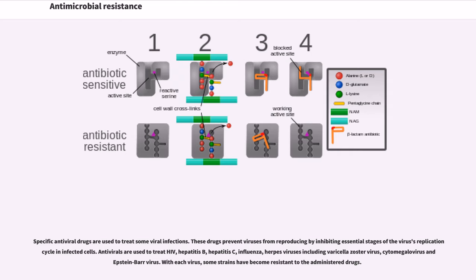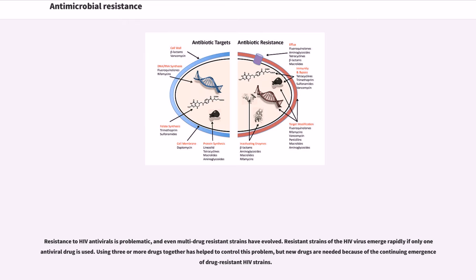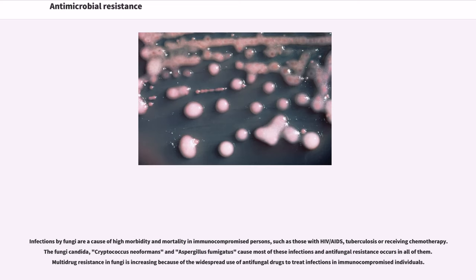Specific antiviral drugs are used to treat some viral infections. These drugs prevent viruses from reproducing by inhibiting essential stages of the virus's replication cycle in infected cells. Antivirals are used to treat HIV, hepatitis B, hepatitis C, influenza, herpes viruses including varicella zoster virus, cytomegalovirus and Epstein-Barr virus. With each virus, some strains have become resistant to the administered drugs. Resistance to HIV antivirals is problematic, and even multi-drug resistant strains have evolved. Resistant strains of the HIV virus emerge rapidly if only one antiviral drug is used. Using three or more drugs together has helped to control this problem, but new drugs are needed because of the continuing emergence of drug-resistant HIV strains.